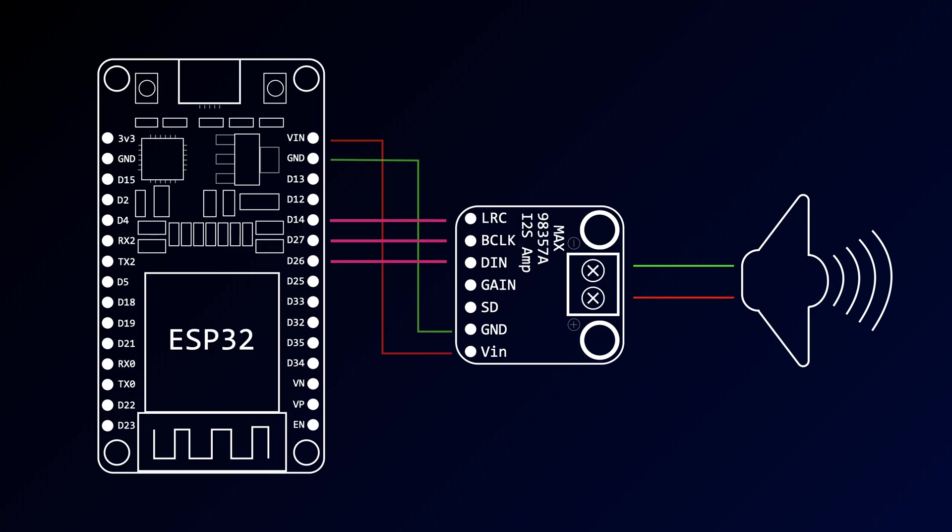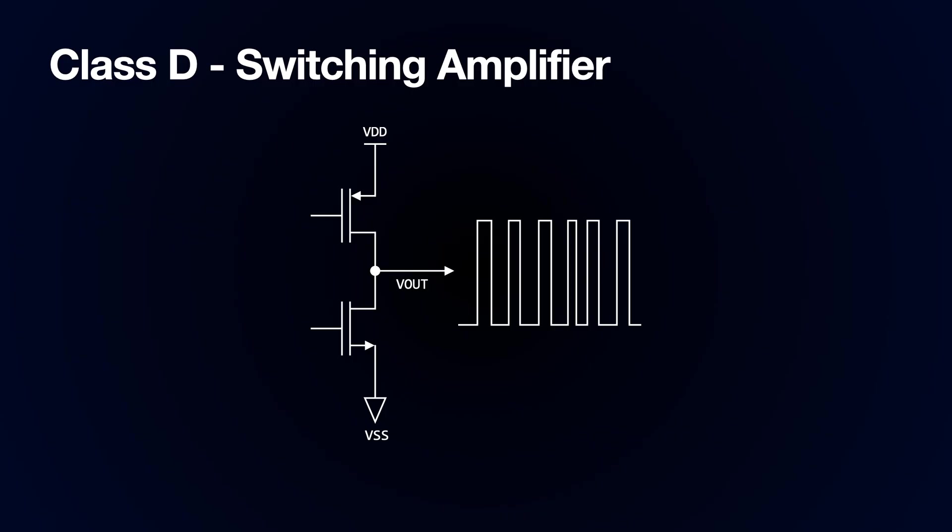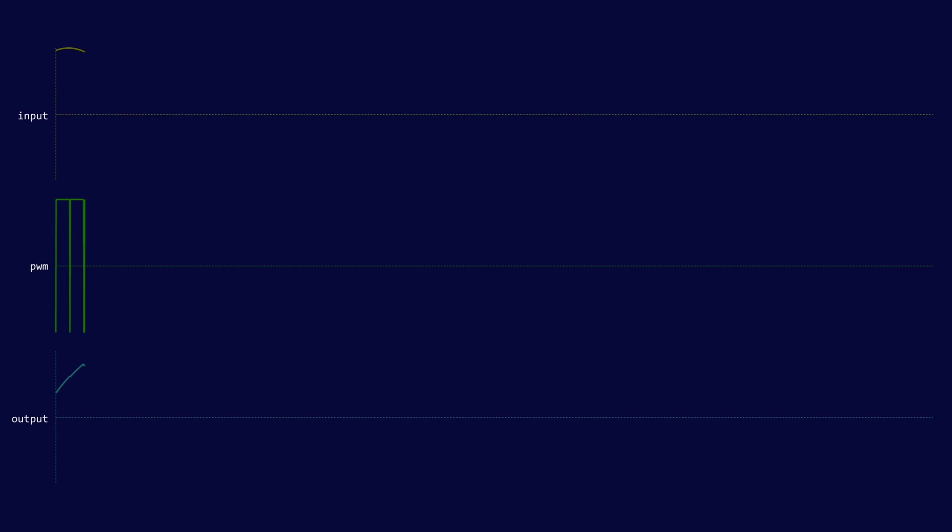That's the basic wiring of the board but what actually is a class D amplifier. So class D amplifiers are also known as switching amplifiers. They output a modulated signal that switches between the positive and negative power rails. This signal is passed into a low pass filter or directly into a loudspeaker to recover the audio signal. This makes the amplifier very efficient as the transistors are only dissipating power when they are switching from high to low and low to high.